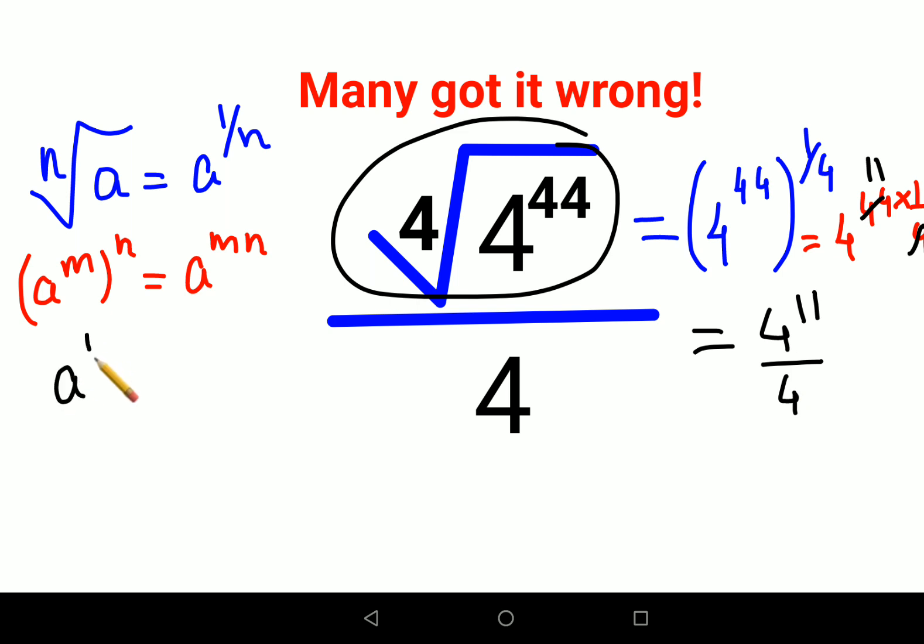Now when you have the same base with different indices in numerator and denominator, you just take the denominator index and subtract it from your numerator index.